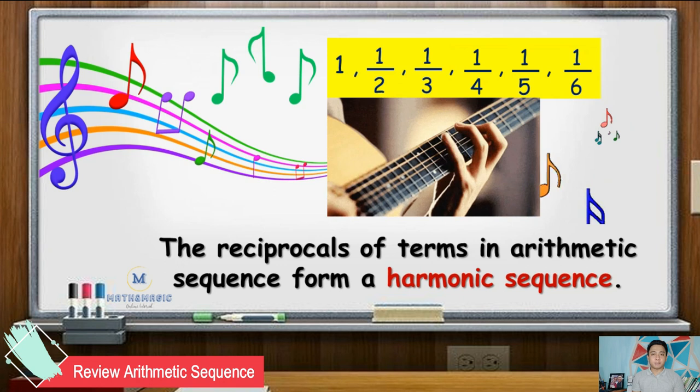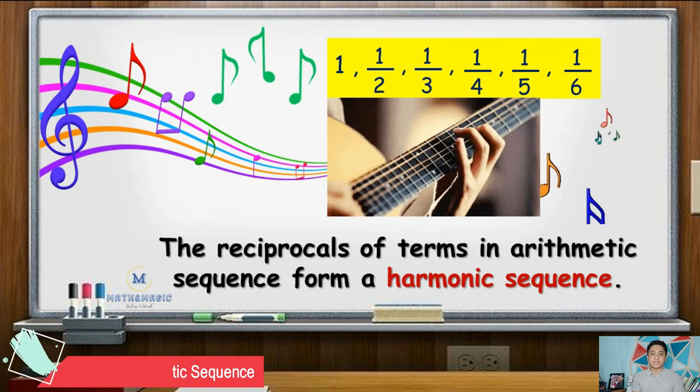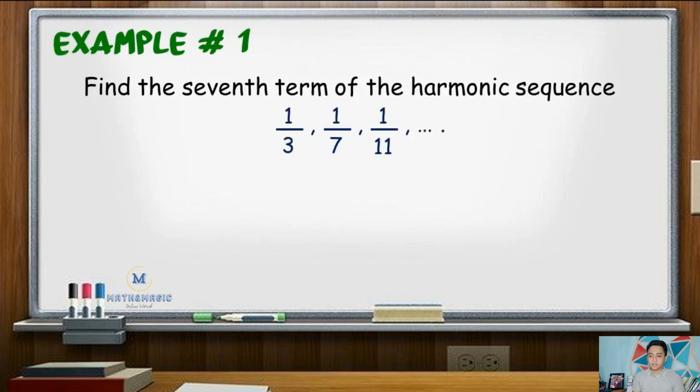So we need to remember the properties for arithmetic sequence like finding the nth term. For our first example, find the 7th term of the harmonic sequence 1 third, 1 over 7, 1 over 11, and so on.